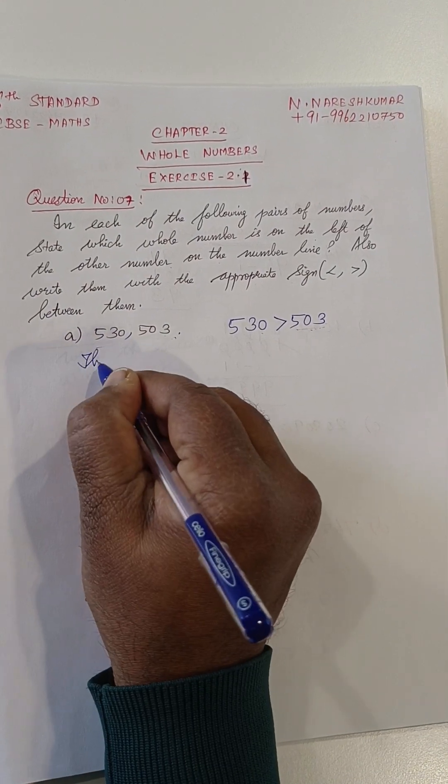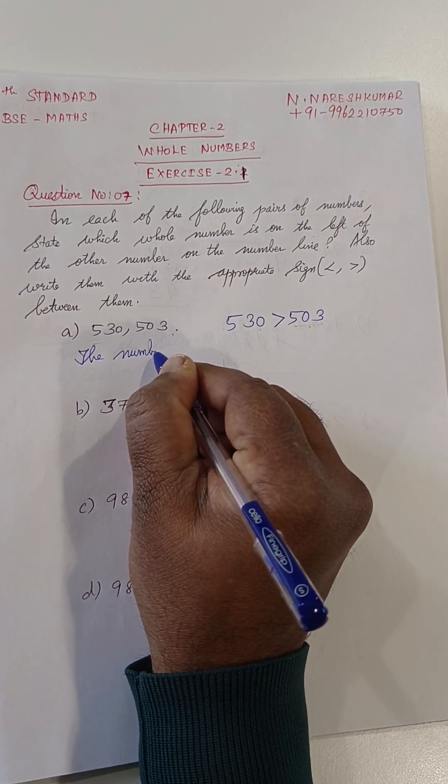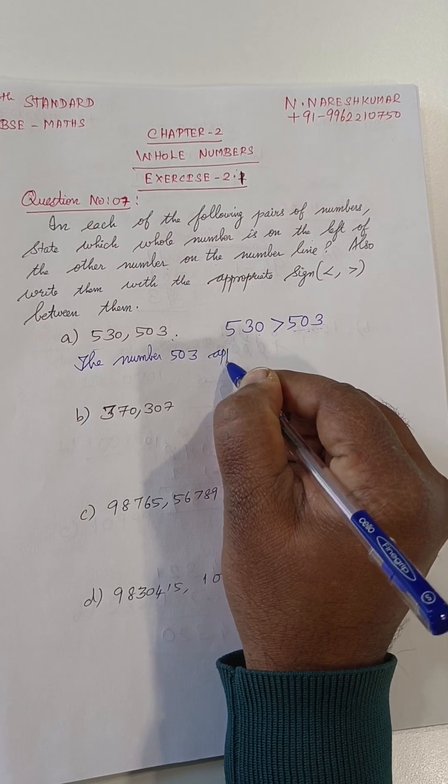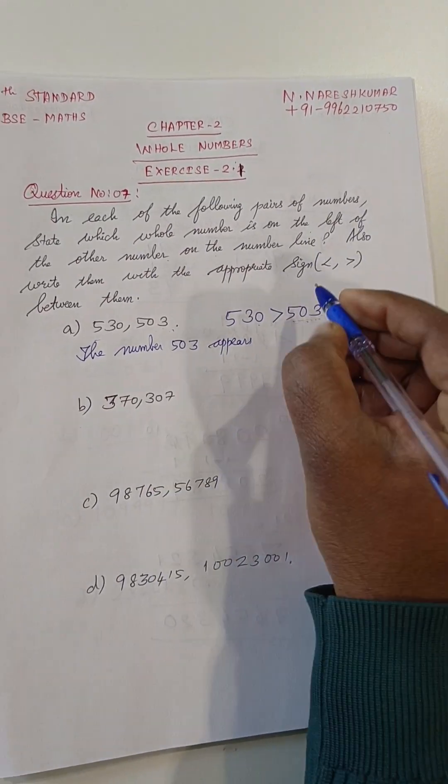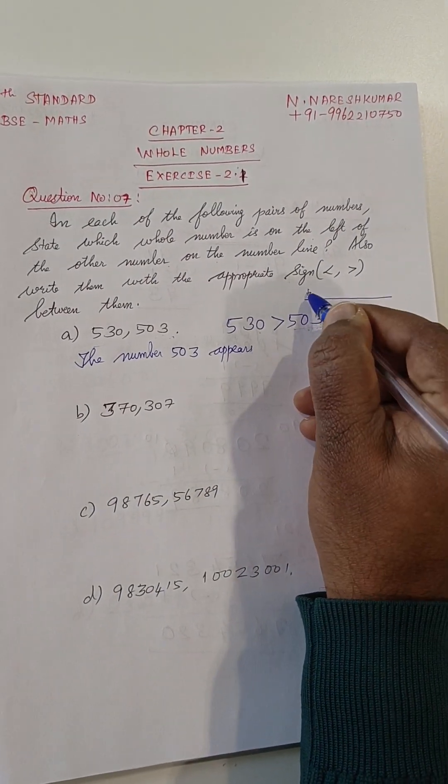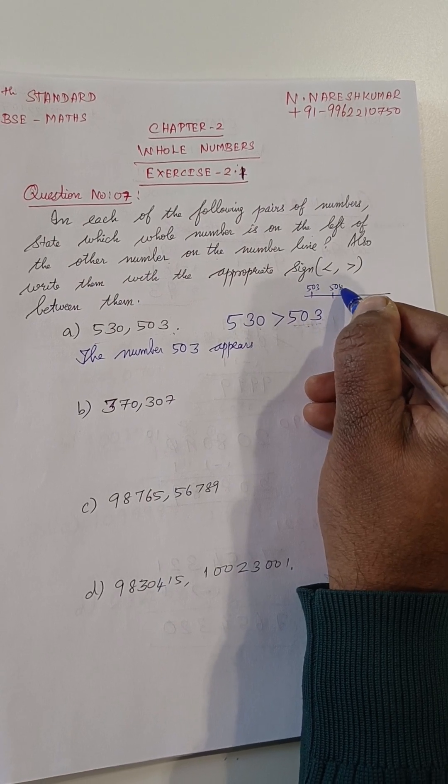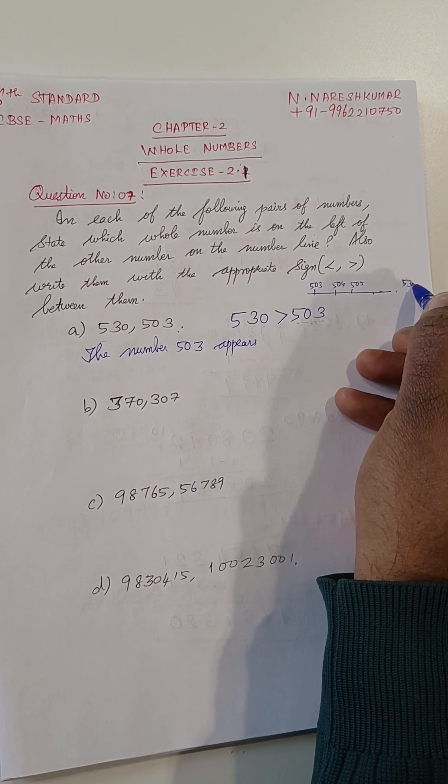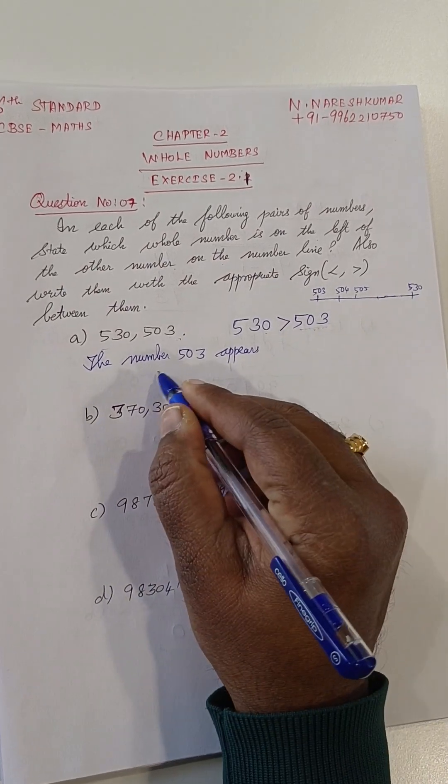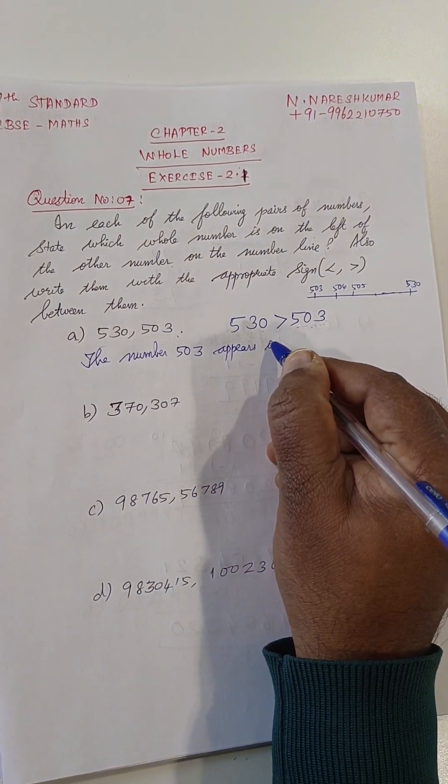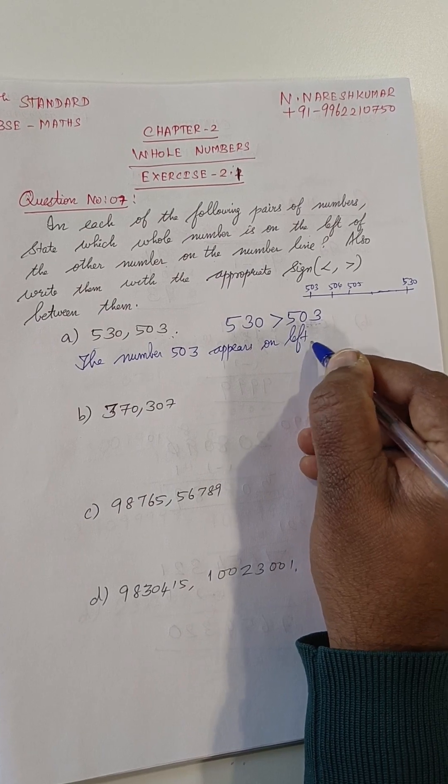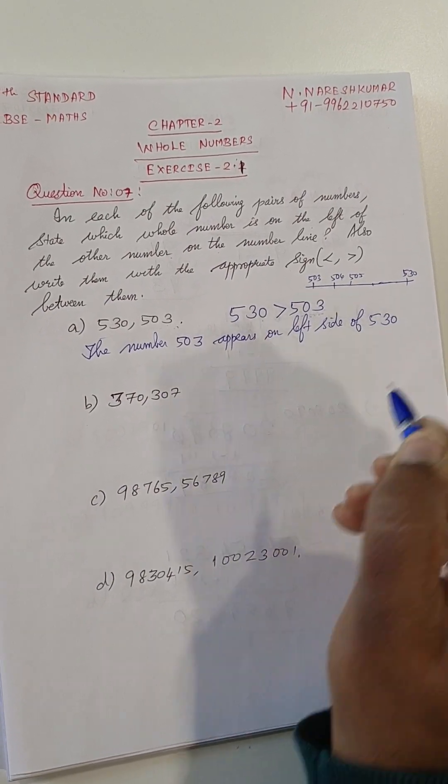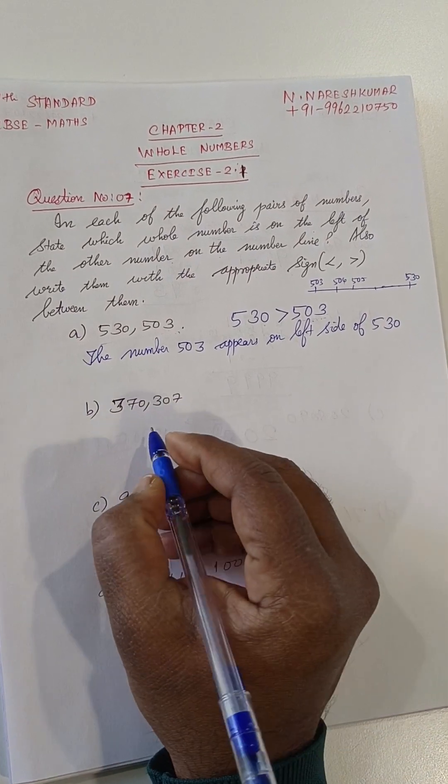So, the number 503 appears first. Then, after that, you see here, line 503, 504, 505. Like this, the line 530. So, the number 503 appears on the left side of the number 530.